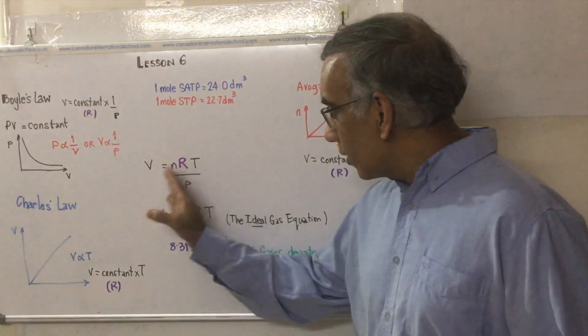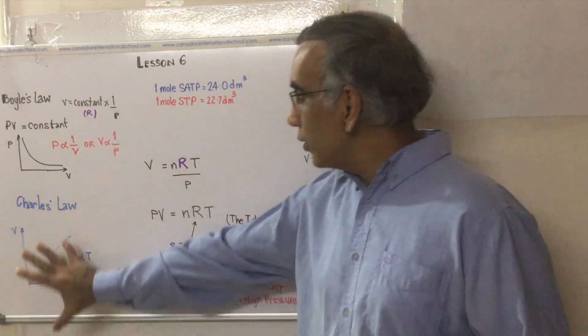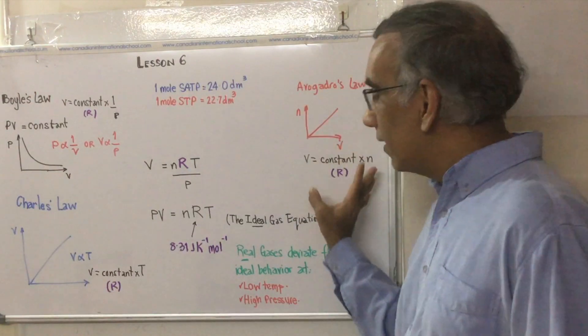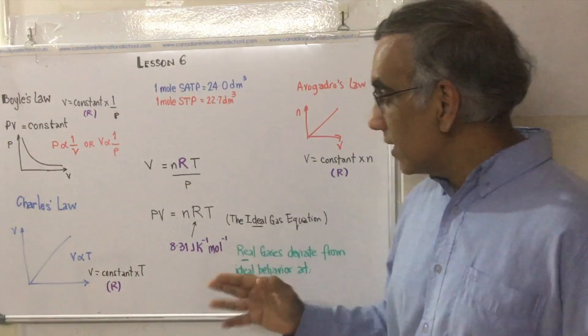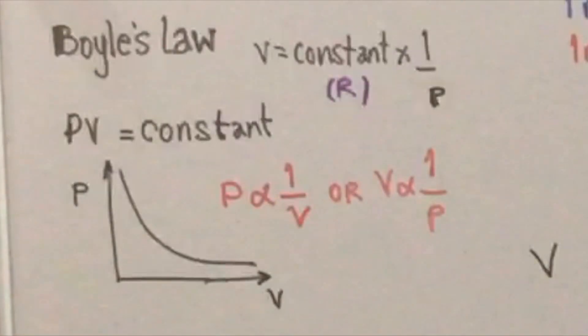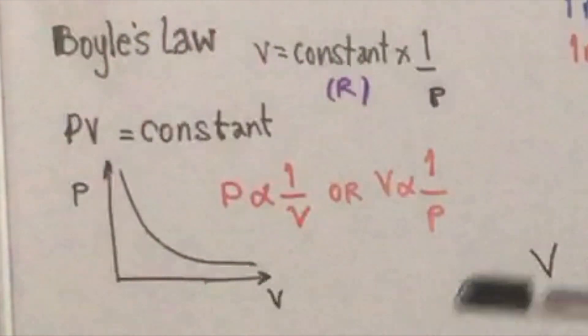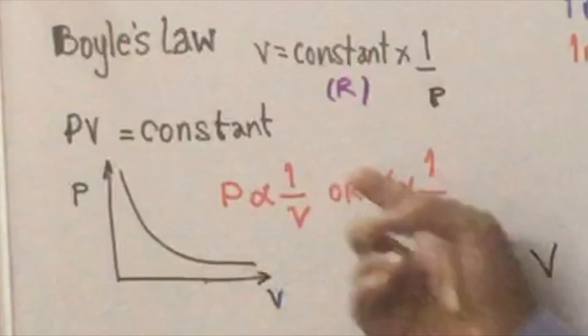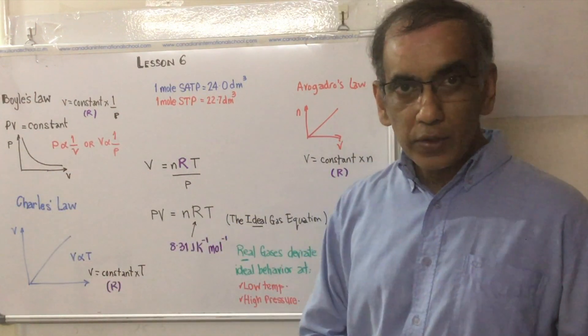So where does this equation come from? It comes from a combination of three other laws that we have. First, Boyle's law, which says that if you have a gas and the volume of that gas goes up, the pressure is going to fall if the temperature is constant. In other words, there's an inverse relationship between pressure and volume at constant temperature.